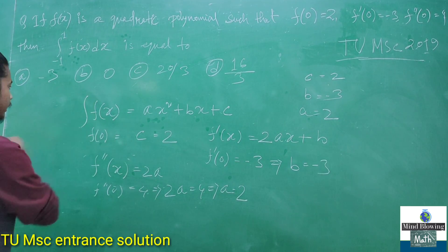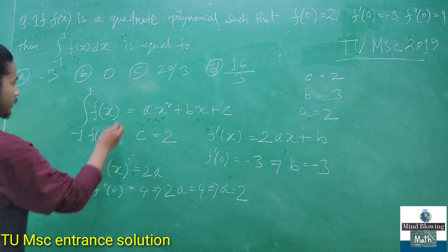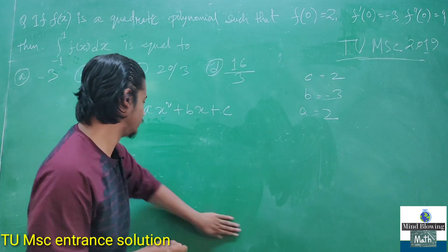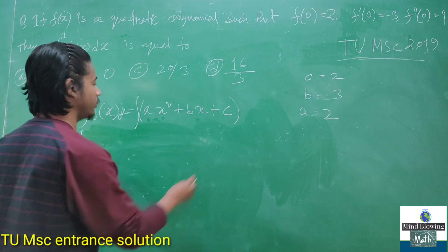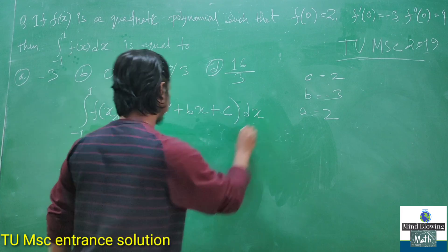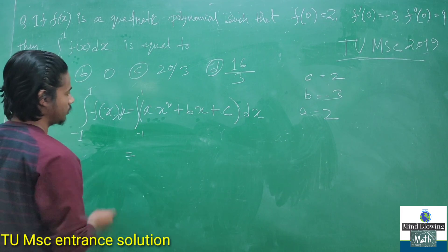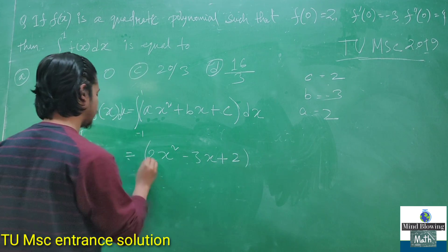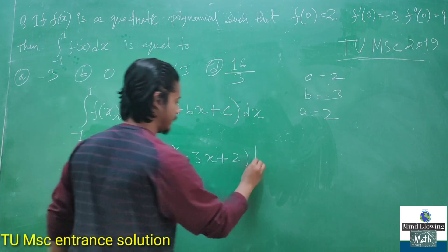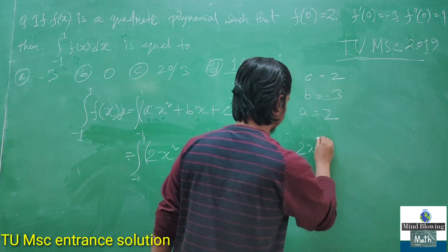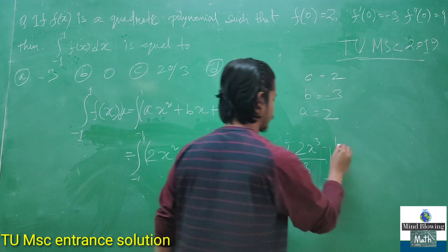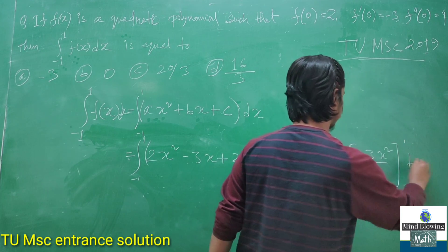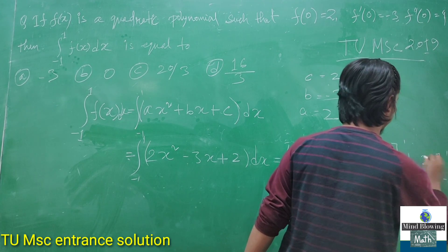Now we need to find the integral value from -1 to 1 of f(x) dx. With a = 2, this becomes the integral from -1 to 1 of (2x² - 3x + 2) dx. Integrating gives us 2x³/3 - 3x²/2 + 2x evaluated from -1 to 1.